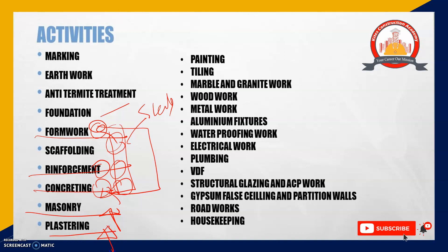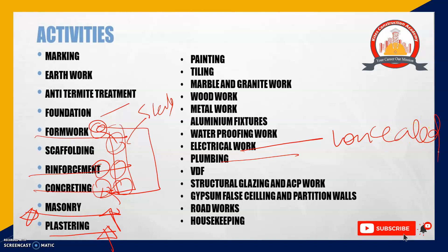After masonry comes plastering — the application of mortar over the finished masonry structure. Before plastering, two important activities must be done: electrical work and plumbing work. These are called concealed activities, meaning they will be embedded in the wall itself. So electrical and plumbing work are done before plastering.